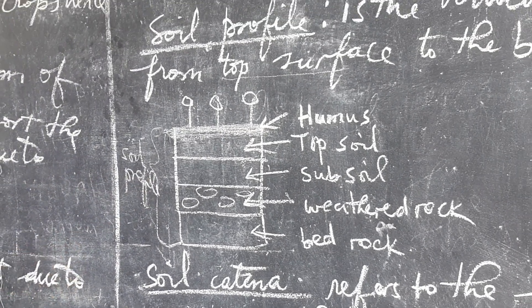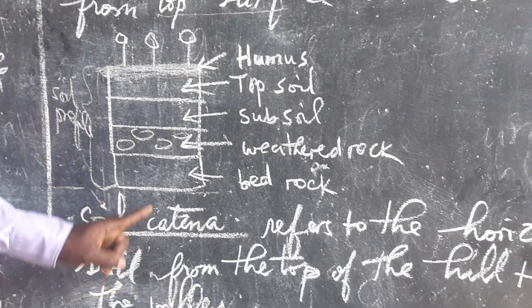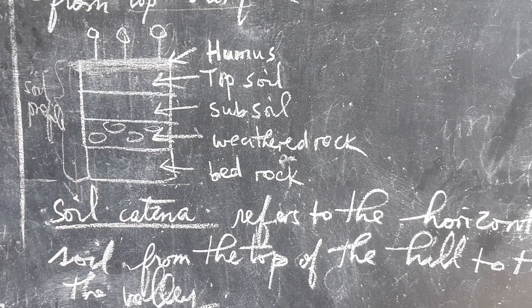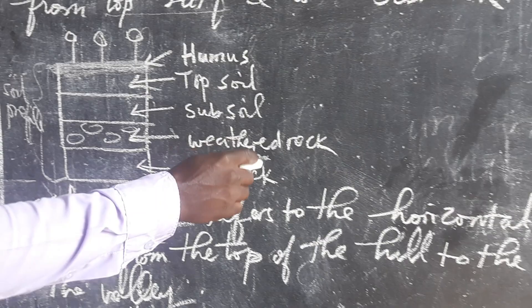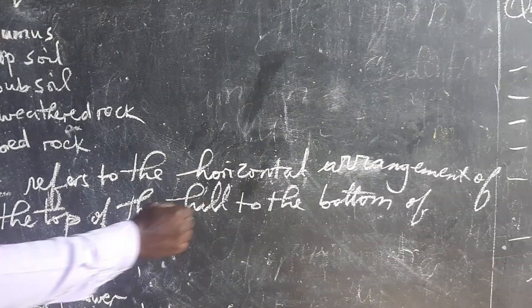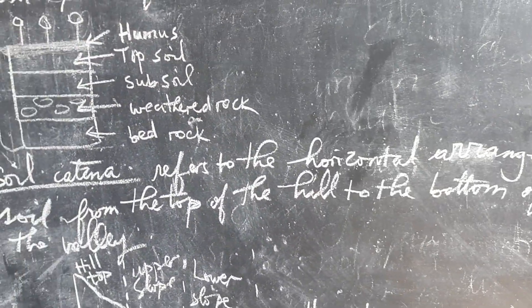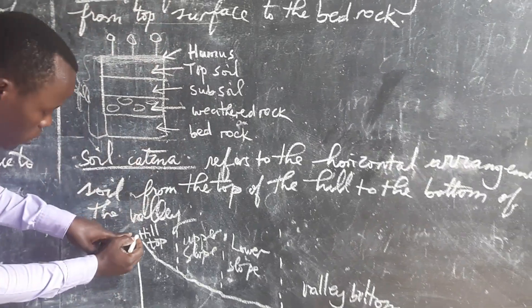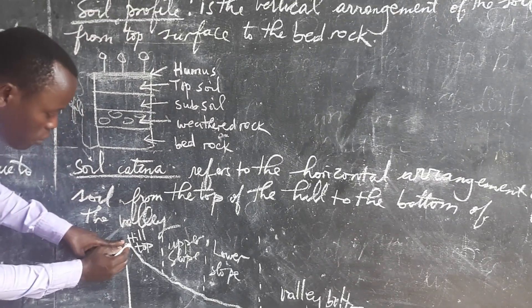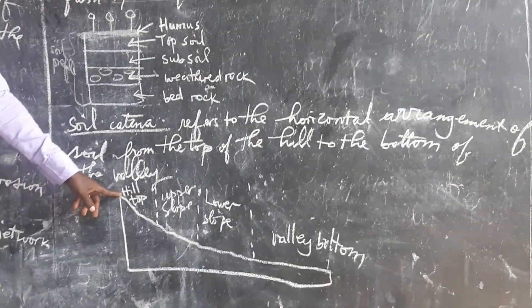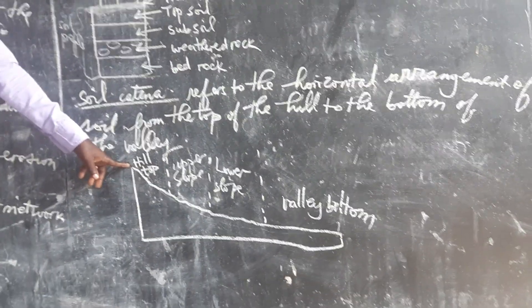And we are going to look at how soil profile is totally different from soil catena. When we talk of soil catena, it refers to the horizontal arrangement of soil from the top of the hill to the bottom of the valley. So meaning that the way soils are arranged from the top hill to where the valley bottom, they make what you call a soil catena.